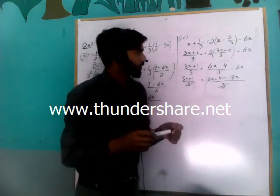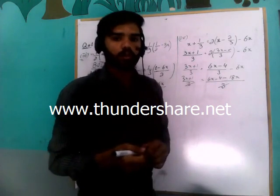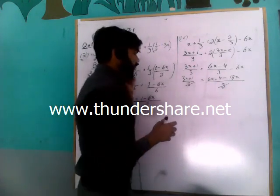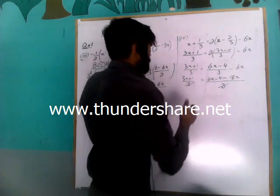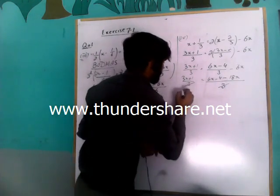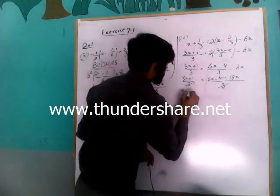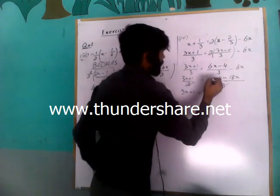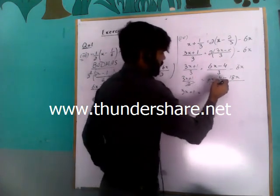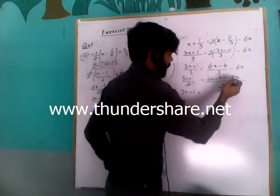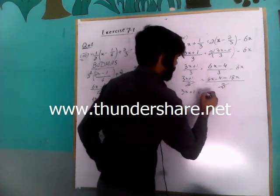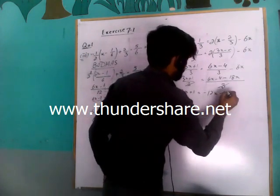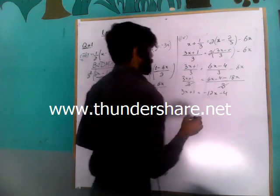After cross multiplication the denominators cancel, so 3x plus 1 is equal to 6x minus 18x, which gives minus 12x, minus 4.